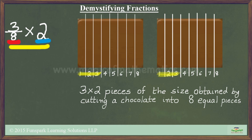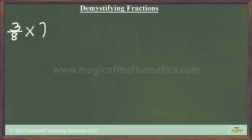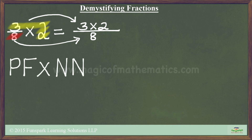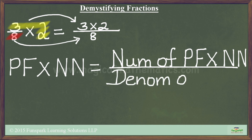Now it is clear that we will end up with 3 times 2 pieces of chocolate. Notice that the piece size has not changed — we are still talking about pieces obtained by cutting a chocolate into 8 equal pieces. Hence, our answer is 3 times 2 by 8. We saw that 3/8 times 2 equals a fraction whose numerator is 3 times 2 and whose denominator is 8. Hence, a proper fraction times a natural number yields a fraction whose numerator equals the numerator of the original fraction times the natural number, and whose denominator equals the denominator of the original fraction.